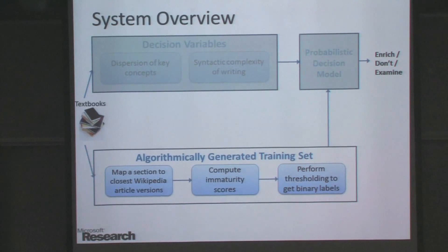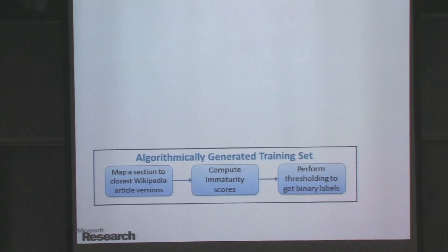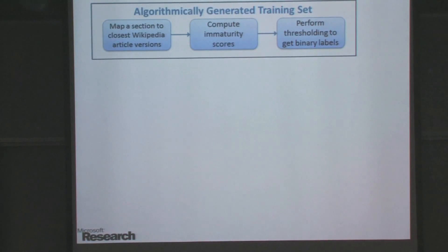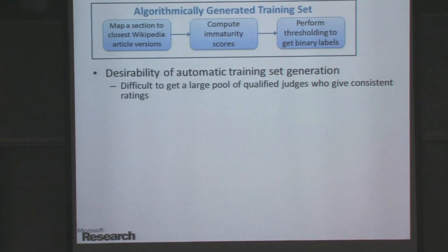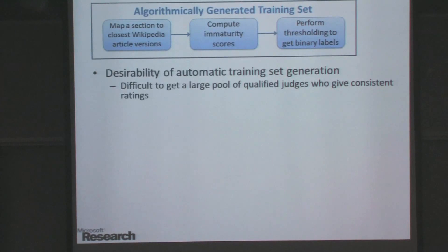The next part is how to generate training data automatically. It's very difficult to get a high-quality label set. It has been noticed that when we get human judgments, it's very hard to get consistency across judges. Especially in a setting like this, where it's not an easy task to judge whether a section spanning many pages is easy to understand or not — it's very hard to get good quality human judgment.